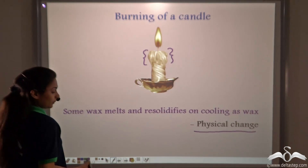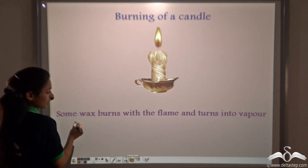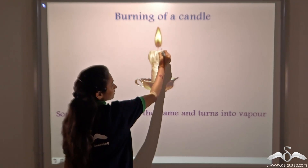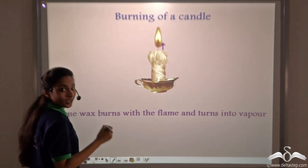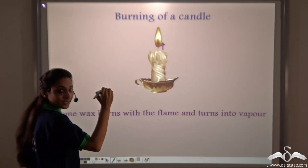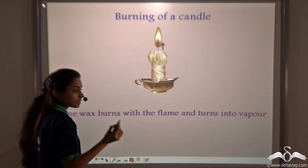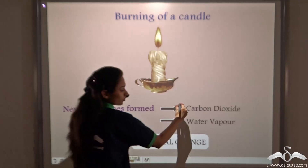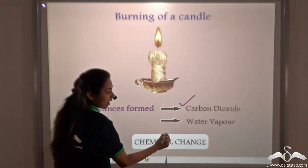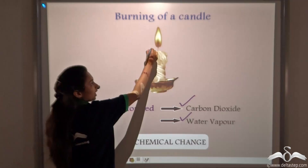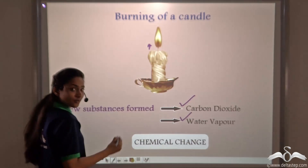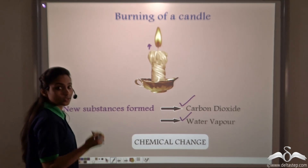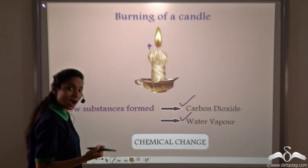Now, where does the chemical change come in? Some wax burns with the flame and turns into vapour. When the candle is burning, some wax is burning with the flame. We cannot see that wax because it has melted and changed into a new substance — that is vapour. So what are the new substances formed? Carbon dioxide is formed in the air, and water vapour is formed out of the wax that has gone up with the flame. So this is a chemical change. We saw that burning of a candle includes both a physical change and a chemical change.